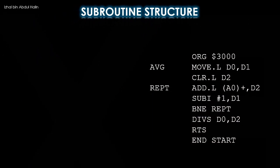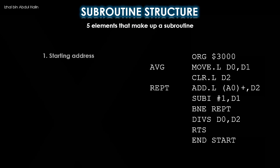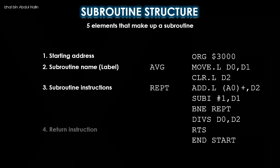You are looking at a subroutine that calculates the average value of a string of numbers. There are five elements that define the structure of a subroutine, including this one. The five elements are the starting address, subroutine name, subroutine instructions, return instruction, and the subroutine end statement. Let's identify these elements with our example subroutine.